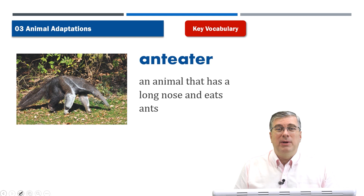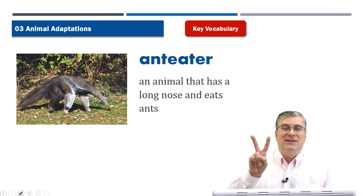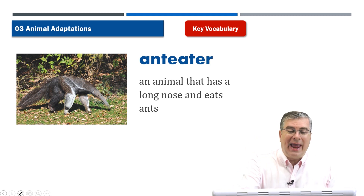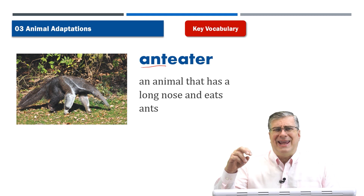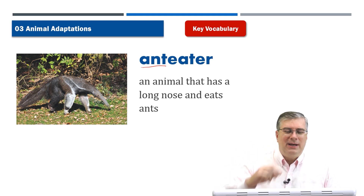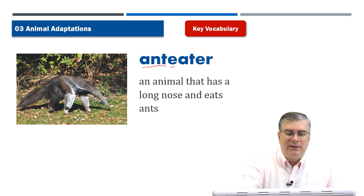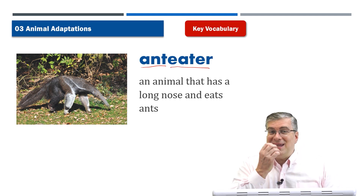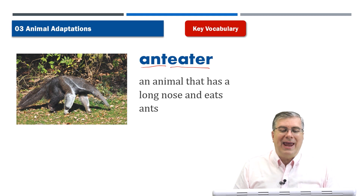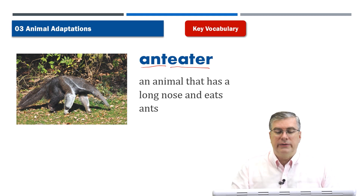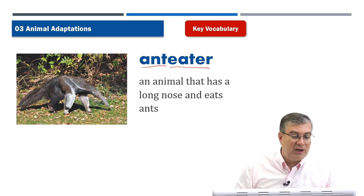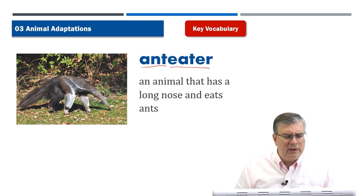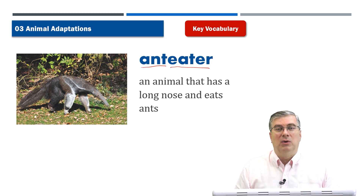As usual, we start with the vocabulary. Our first word today is anteater. This is actually two words: ant — little ants running around — and eater. So anteater is an animal that has a long nose and eats ants. This is a good picture of an anteater. It's a really strange looking animal, isn't it? But it's a very unique and amazing animal, as all animals are actually.